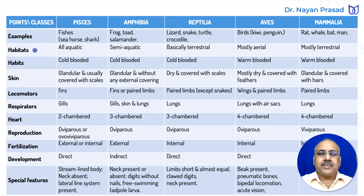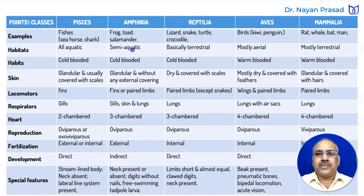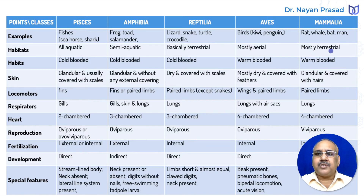When we talk about habitat — the place of living — all fishes are aquatic. Amphibians are semi-aquatic, meaning half aquatic and half terrestrial. Reptiles are basically terrestrial, though some members live in water also. Aves are mostly aerial. And in Mammalia, most members are terrestrial.